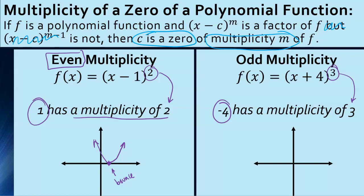So how does that look when you graph it? It's an odd multiplicity, so the graph would pass through that x-intercept. It might be doing some weird things above or below the x-axis, but it's only going to have one x-intercept and it's going to pass through it. So if the exponent is odd — 1, 3, 5, 7, 9 — the graph passes through that x-intercept. If it's an even multiplicity, the graph bounces off that x-intercept.